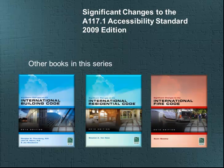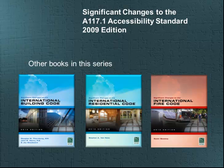In addition to the A117.1 Accessibility Standard, books in the Significant Changes series also include the 2012 International Building Code, International Residential Code, International Fire Code, and the International Plumbing, Mechanical, and Fuel Gas Codes. The Significant Changes series also includes some books dealing with both the 2006 and the 2009 International Codes.